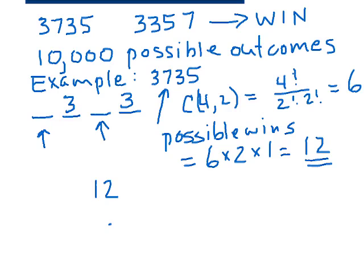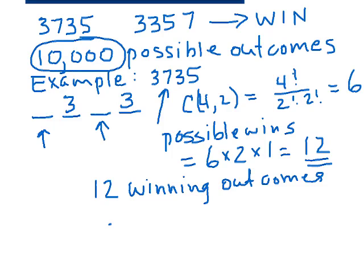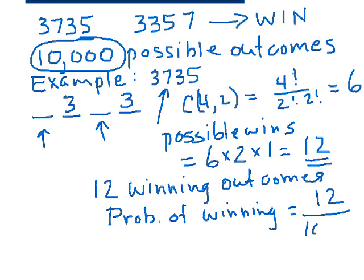12 winning outcomes. And remember that altogether there are 10,000 possible outcomes. So we win in 12 of those 10,000 cases so the probability of winning would be equal to 12 over 10,000 or 0.0012.